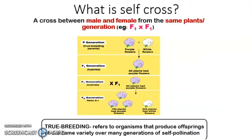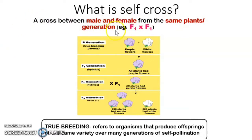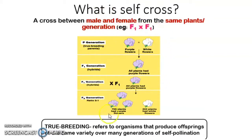So now we look at what is self-cross. Self-cross is a cross between male and female from the same line or from the same generation. This is how to get the F2 — you have to do F1 cross with F1. So let's look at the diagram here.